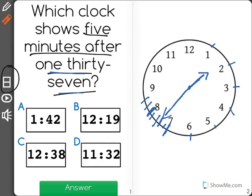So to count five more, we would just count up from 1:37. 1:38, 1:39, 1:40, 1:41, 1:42.